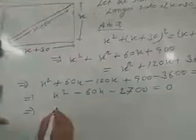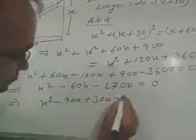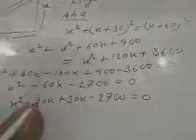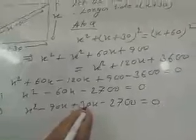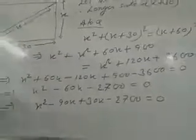Now, middle term split you do, x square minus 90x plus 30x minus 2700 is equal to 0. 90 into 30, 2700, 2700 into 1, 2700.